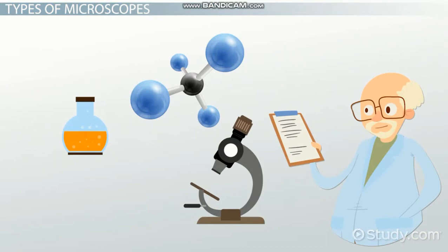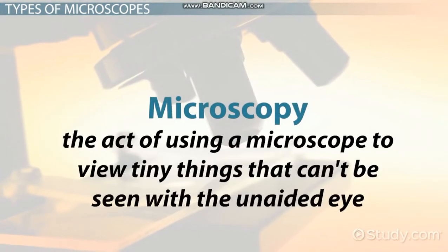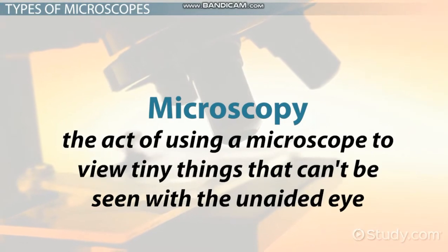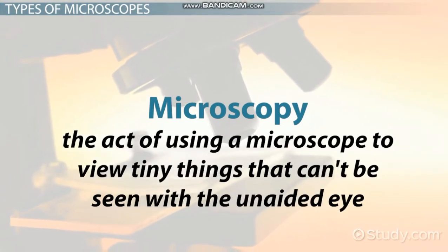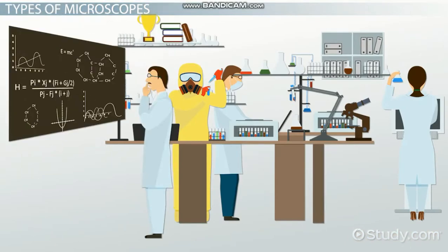Microscopy is the act of using a microscope to view tiny things that can't be seen with the unaided eye. There are three main types of microscopy: optical microscopy, scanning probe microscopy, and electron microscopy.